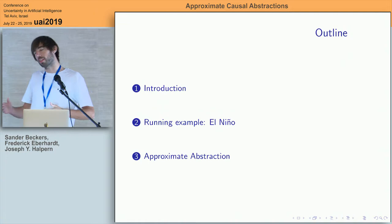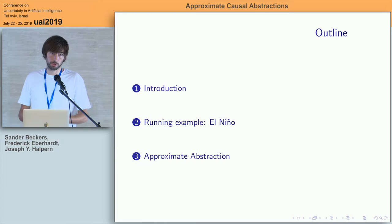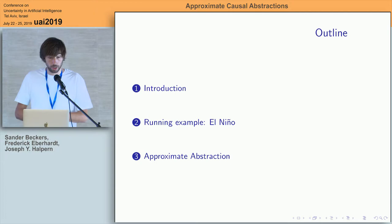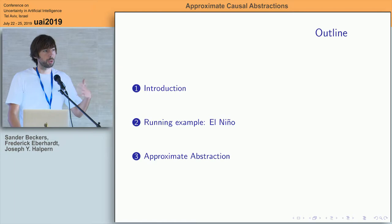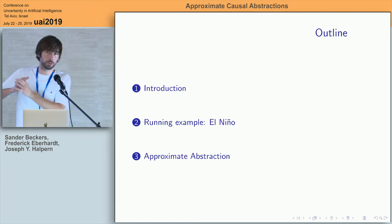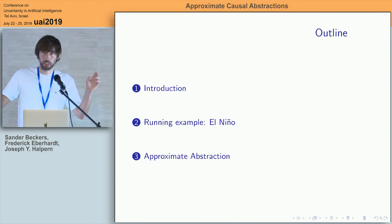I'll first try to motivate why we should care about approximate abstractions, and explain the rough idea of what an abstraction is. Then I'll go through a running example to give you a sense of the problem. I won't go into technical details — that would take too much time. I'll also give you a sense of the challenges and the flexibility of the framework, since we went for a framework that allows for many different choices by the modeler as to what they consider the most important parameters for approximation.